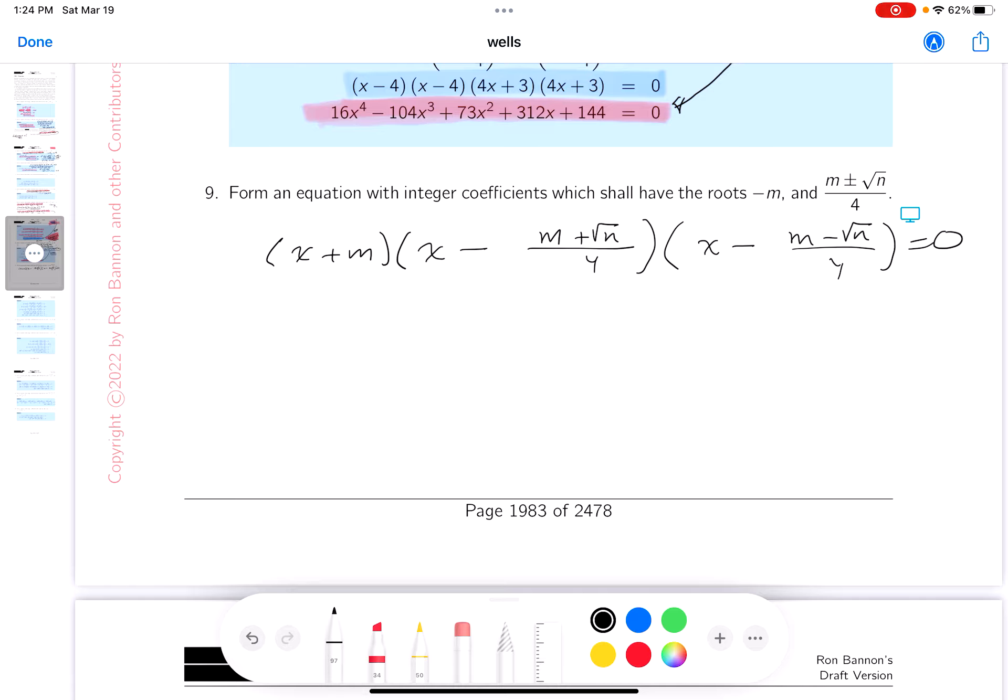Now, what I'm going to do is multiply both sides by 16. You get x plus m, and then what do you get? You get x, I'm multiplying by 16. Let me repeat this. 16 is 4 times 4. So I'm associating a factor of 4 with this guy.